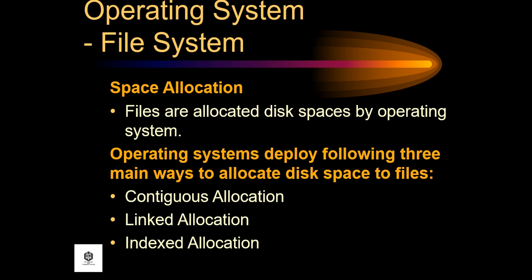Files are allocated disk space by the operating system. Operating systems deploy the following three main ways to allocate space for files: contiguous allocation, link allocation, and index allocation.